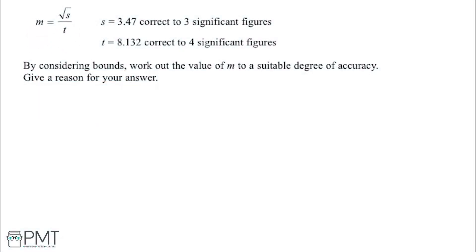We've got the statement that m equals the square root of s divided by t. We're told that s is 3.47 correct to 3 significant figures, and t is 8.132 correct to 4 significant figures. By considering the bounds of these, we need to work out the value of m to a suitable degree of accuracy, giving a reason for our answer.